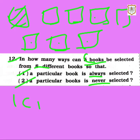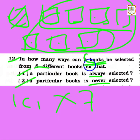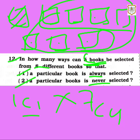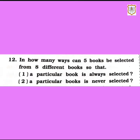So if that particular book is always selected, that will be counted as 1C1. Now one book is already selected, so remaining there are seven books. Since five books are to be selected and one is already selected, four more will be selected from the remaining seven, which gives 7C4. So the combination for condition one — a particular book is always selected — is 1C1 × 7C4.